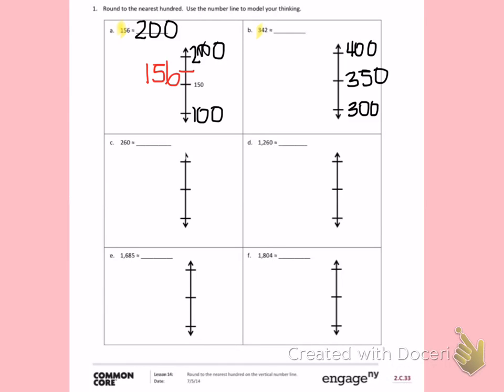My halfway number is 350. 342 is about here on the number line. 342 has not gone past the halfway number, so I will round 342 down to 300.